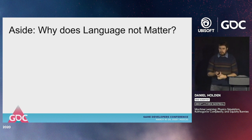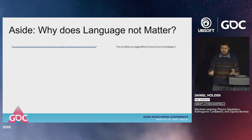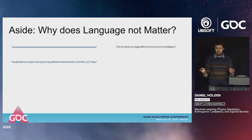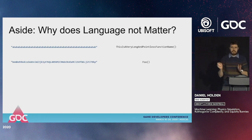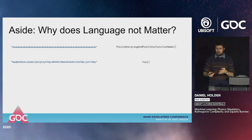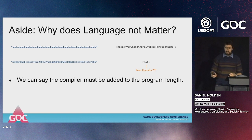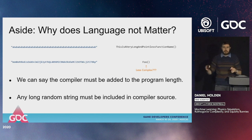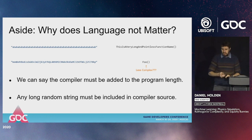Why does the programming language not matter? We could have a language where the function for producing a simple repeating string has a very long pointless name, or one where a random string has a built-in short-named function. The trick is that we need to add the compiler to the length of the program. So any long random string appearing as a built-in means a very complex compiler that had to memorize it.